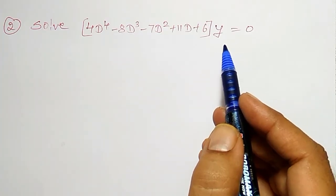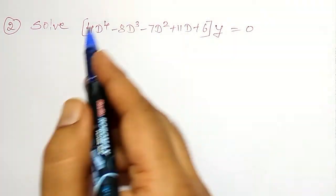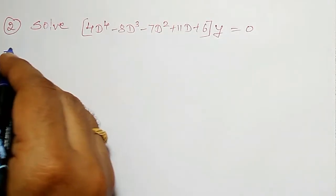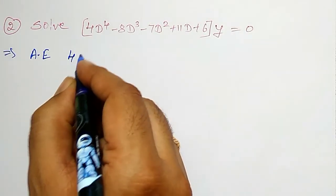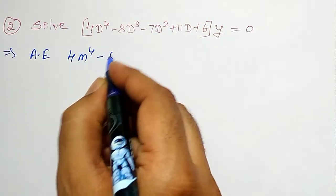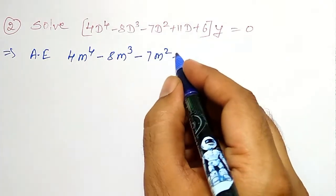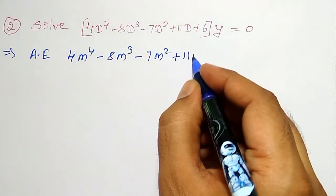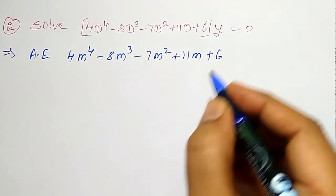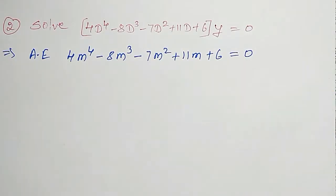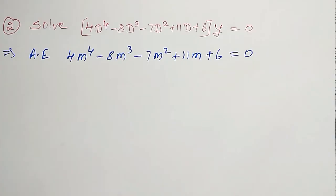Then to find out that CF, we have to find out the roots of this differential quadratic equation. To find out that, first auxiliary equation I have to write. My auxiliary equation is 4m^4 - 8m^3 - 7m^2 + 11m + 6 = 0 is my auxiliary equation. By replacing D by M I am going to get.